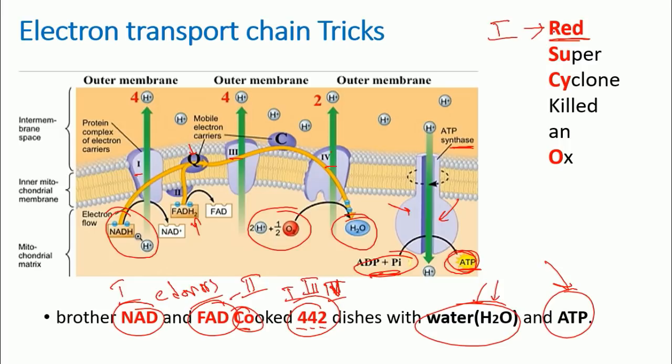So start with 'red,' and 'red' stands for reductase. So the first complex name is NADH-coenzyme Q oxidoreductase. That's why you write reductase or oxidoreductase. The second one is complex number two: 'su,' so you go with succinate dehydrogenase, which is actually an enzyme of TCA cycle.